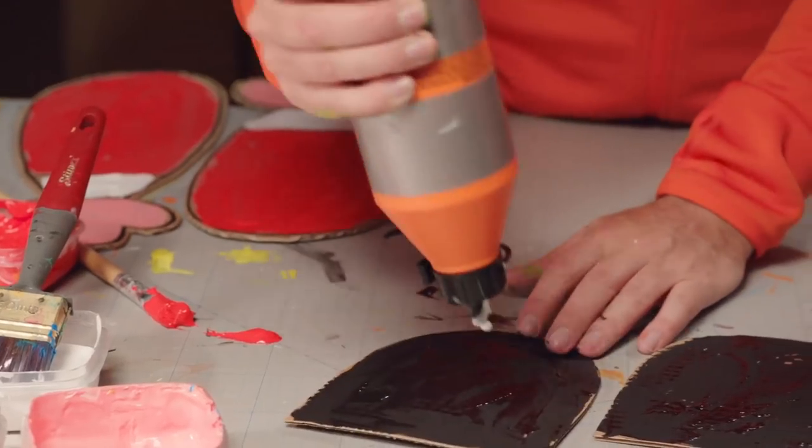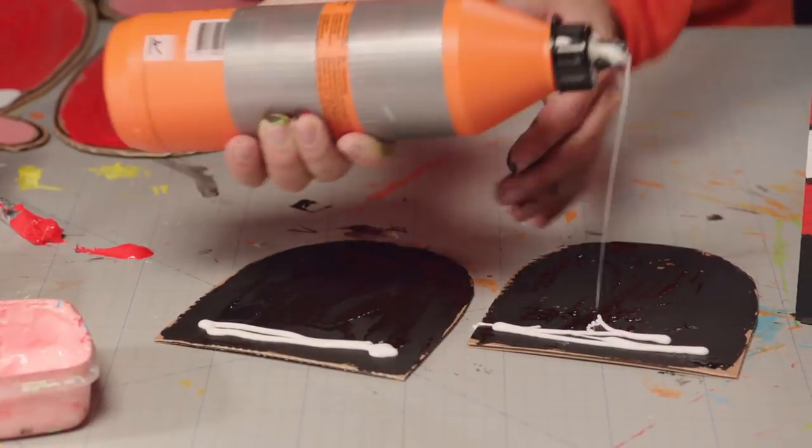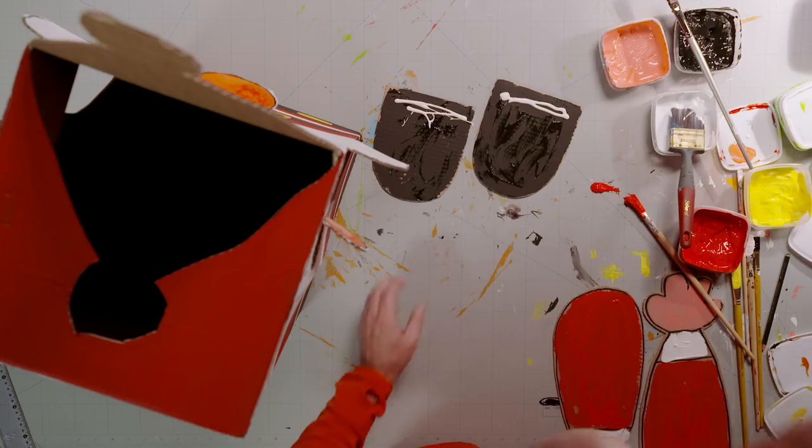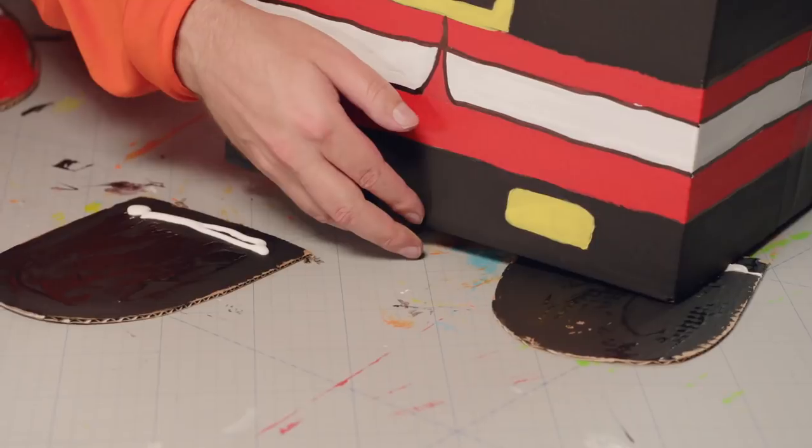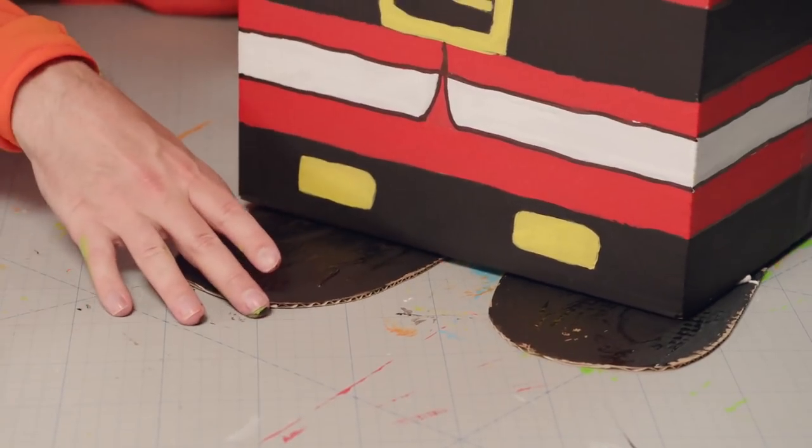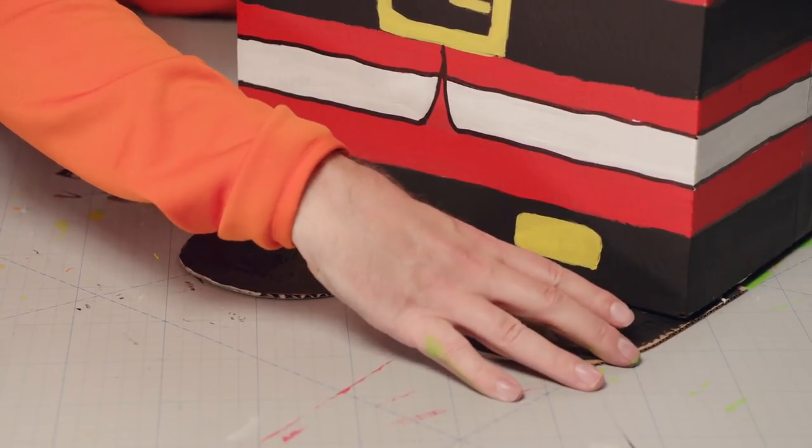Now it's glue time! Scratch some glue on the back of the toe caps. Put them underneath. Get them just right. Then press down so they stick in place.